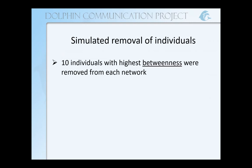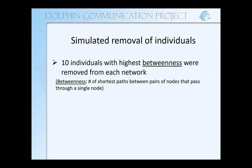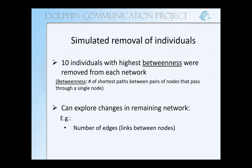My simulated removal of individuals involved removing the ten individuals that had the highest betweenness from each network. As a reminder, betweenness is the number of shortest paths between pairs of nodes that pass through a single node, so it highlights important individuals. Though betweenness correlated between the two networks, the ten with the highest betweenness were different in the association and the interaction network. After removing them, I explored changes in the remaining network — in the number of edges and the average degree, or the number of edges connected to each node.